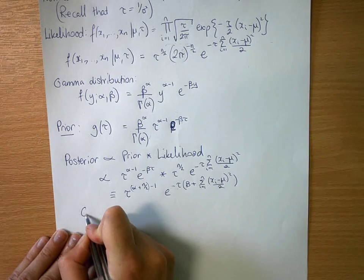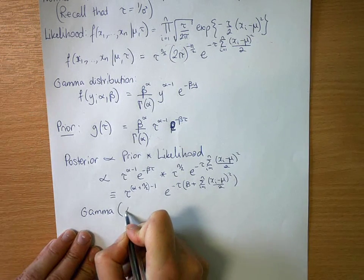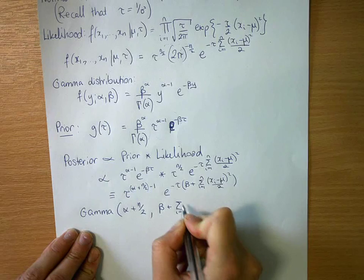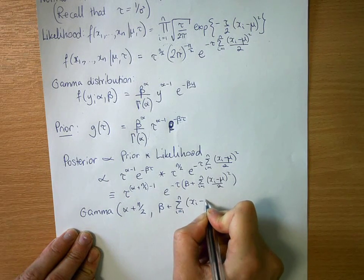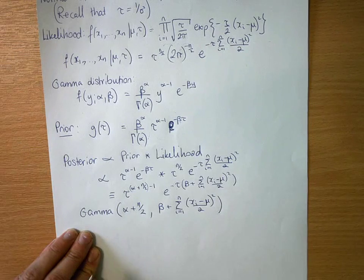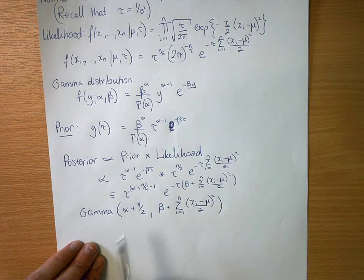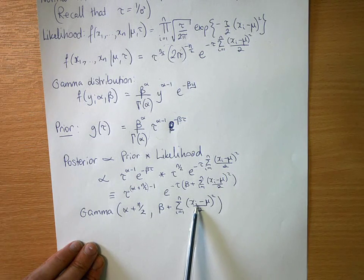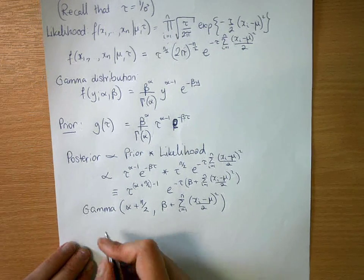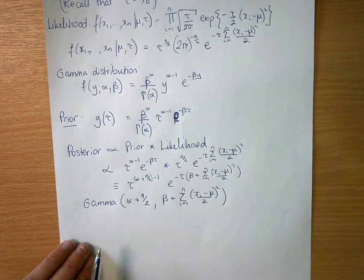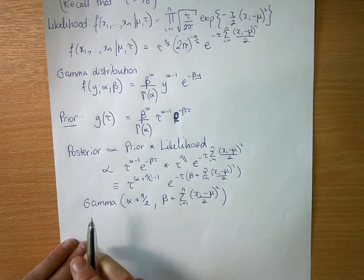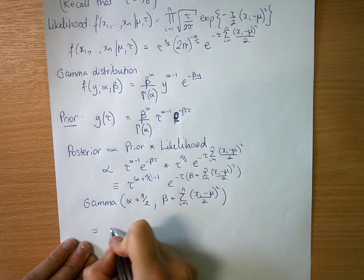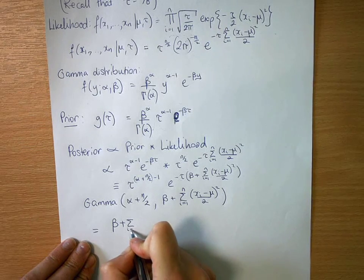So this is a gamma with parameters α + n/2, β + Σ(xᵢ-μ)²/2. So that immediately shows you your updating rules, so you add the number of observations divided by 2 to your first parameter, and the sums of squares over 2 to your second parameter, and you can work out your constant of integration quite easily without having to do any integration, so your constant of proportionality.